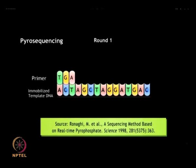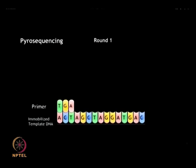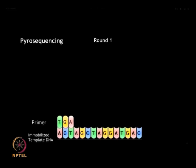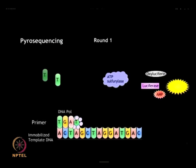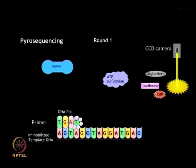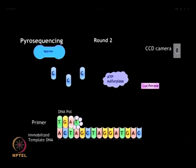Multiple rounds of nucleotide addition are carried out on the immobilized template DNA using DNA polymerase in the presence of ATP sulfurylase. The light produced by the interaction with luciferase is captured, and the amount of light is determined by means of a CCD camera, which is used to determine the nucleotide added and therefore the sequence of the template DNA.